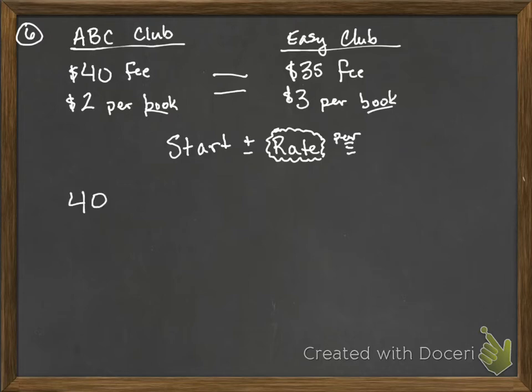So the ABC book club is $40 plus $2 per book. When is that going to equal the Easy club which is $35 plus $3 per book B? So now we're trying to solve this equation and figure out how many books you have to read.